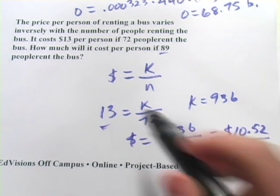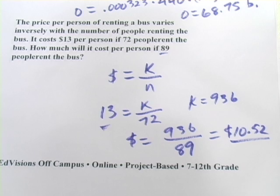So definitely a savings over the $13. So those are a few word problems with variation.